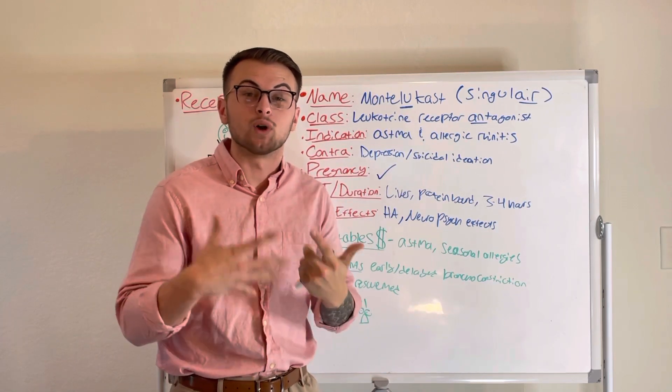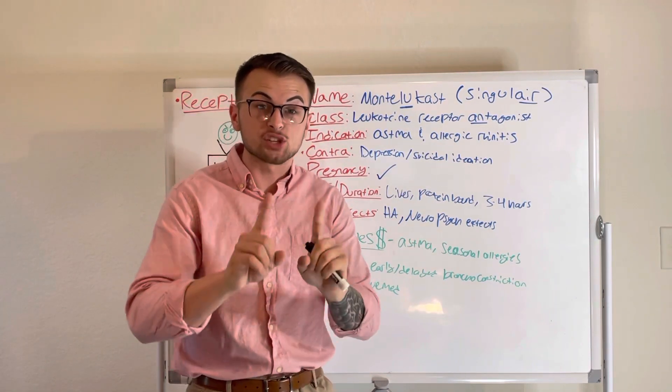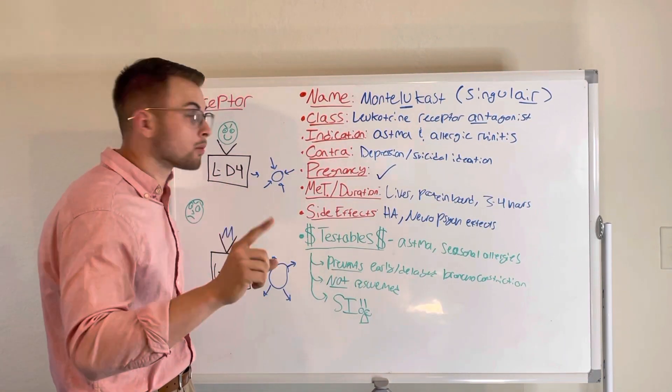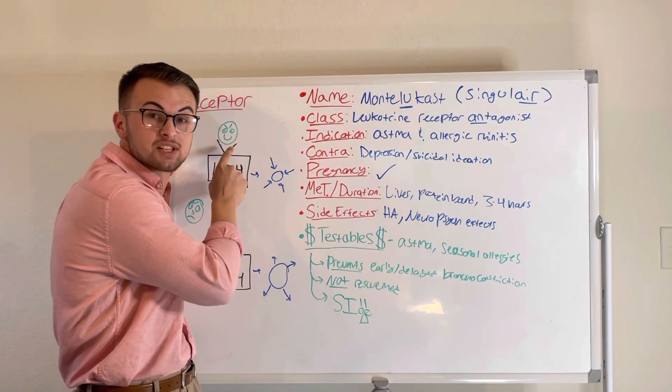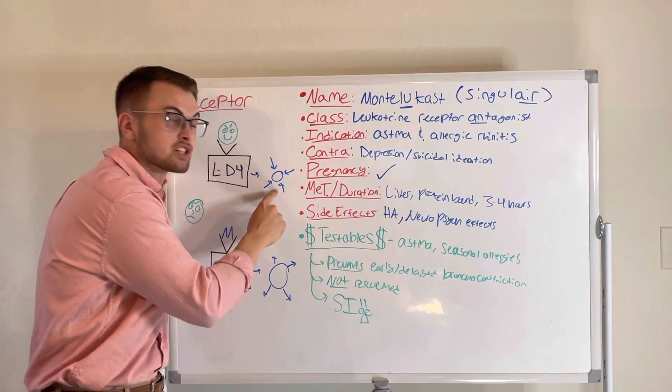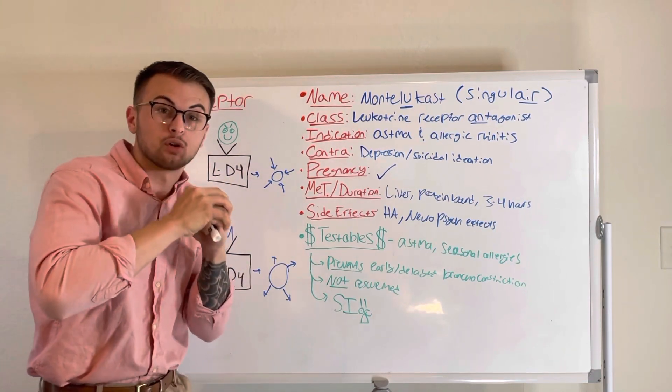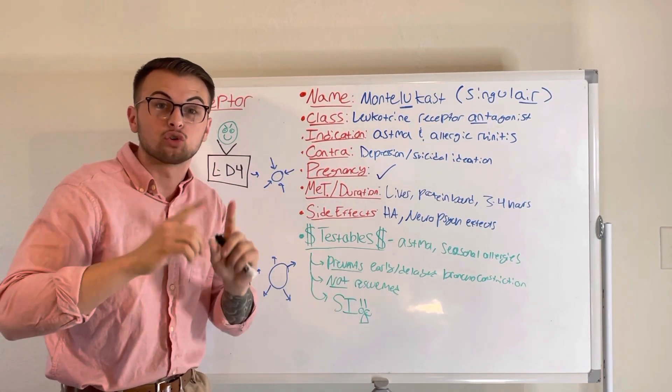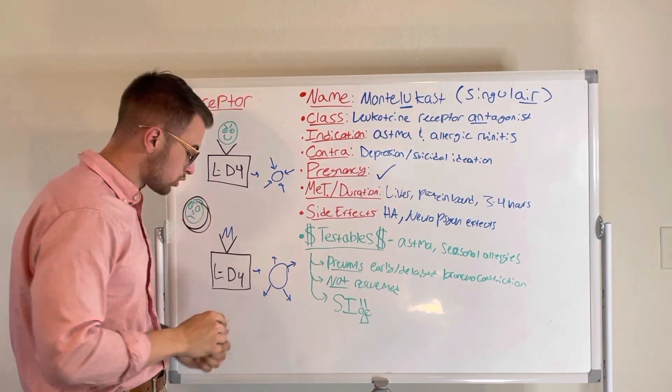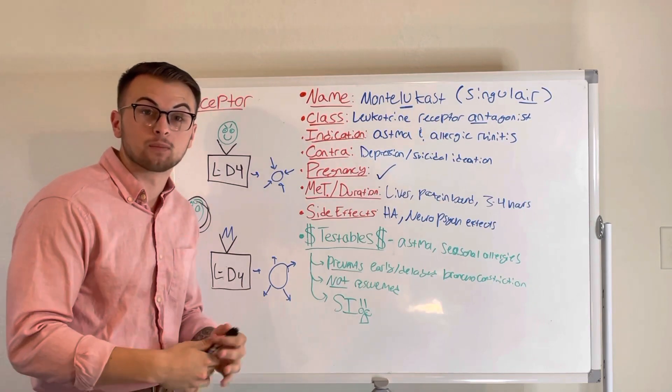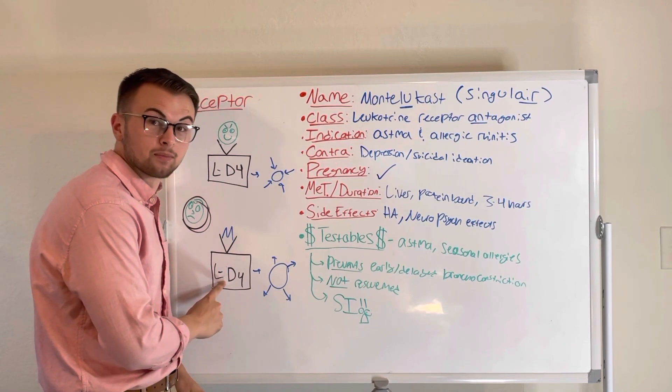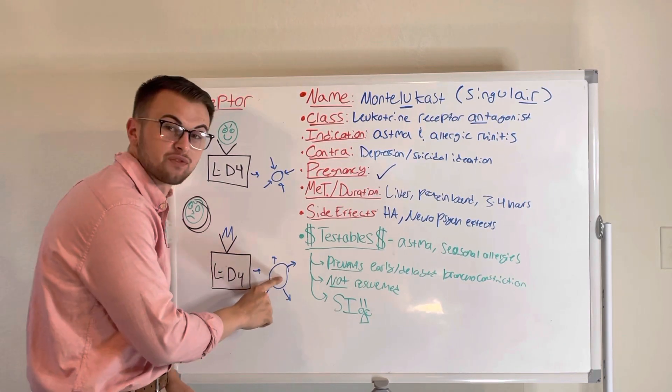This drug binds to leukotriene D4 receptors. Normally, when allergen substances cause an increase in binding to these receptors, immediate and delayed bronchoconstriction results. Imagine that this drug creates a singular cast around the leukotriene D4 receptors, which will prevent harmful substances from binding to the receptor and therefore will prevent bronchoconstriction.